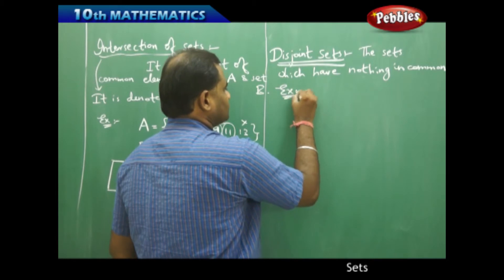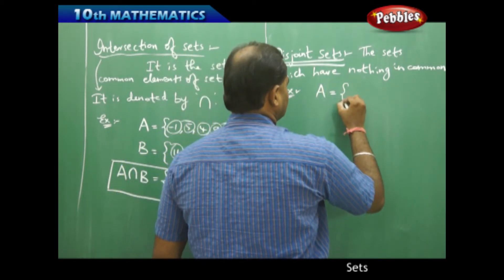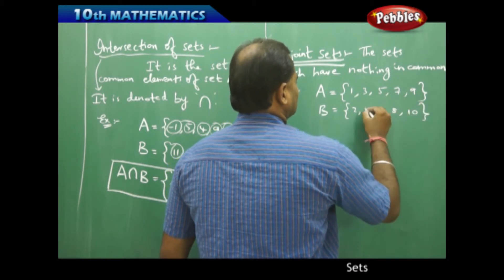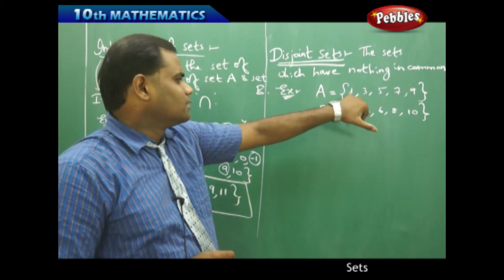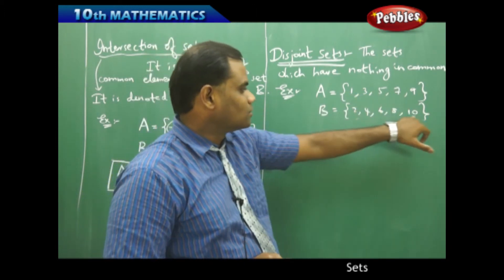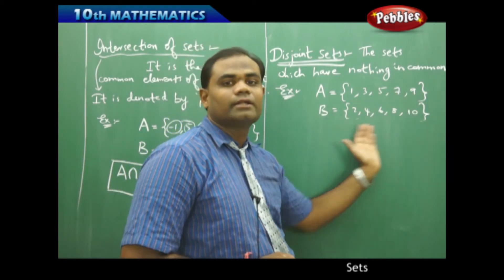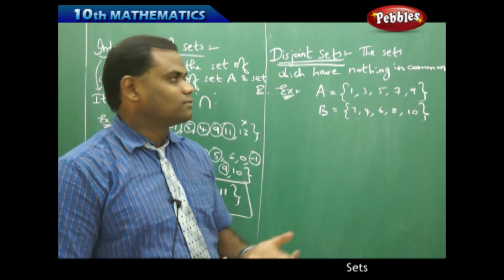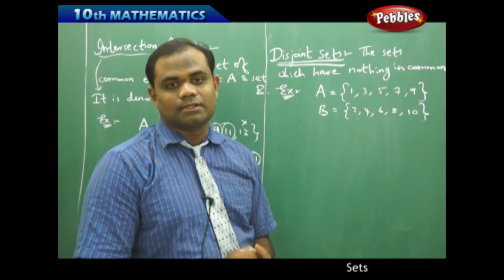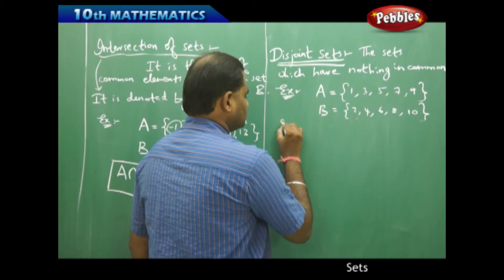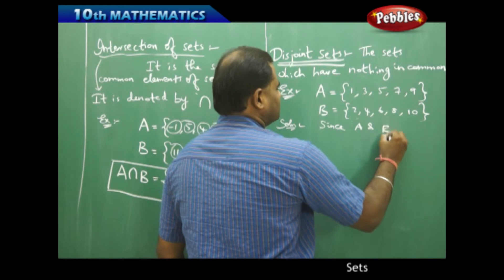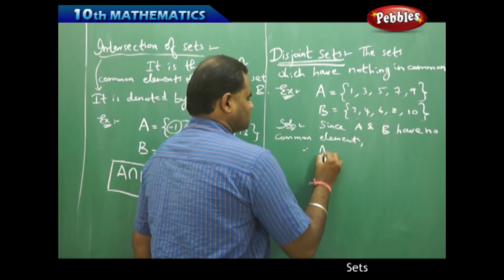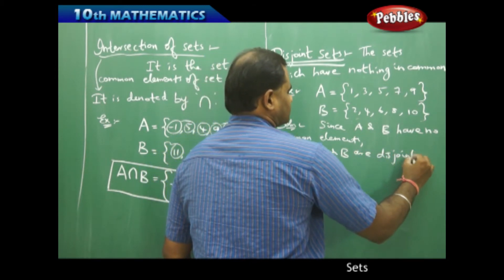For example, set A = {1, 3, 5, 7, 9} and set B = {2, 4, 6, 8, 10}. Clearly, the first element of set A, which is 1, is nowhere found in set B. Similarly, 3, 5, 7, and 9 are also nowhere found in set B. This tells us that these two sets have no element in common. Since A and B have no common elements, A and B are disjoint sets.